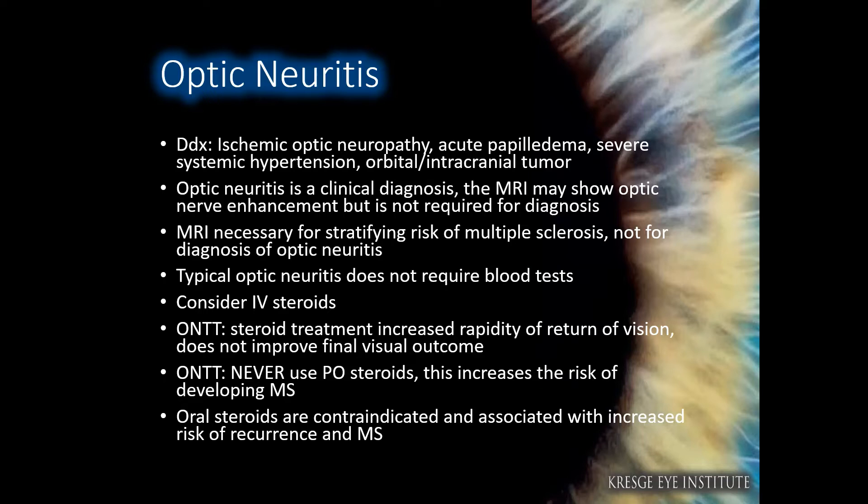For treatment, consider IV steroids. The landmark study, the Optic Neuritis Treatment Trial, noted that IV steroid treatment increased rapidity of return of vision, however did not improve final visual outcome. It also found to never use oral steroids, because this increases the risk of multiple sclerosis.